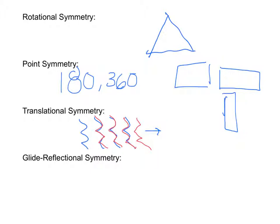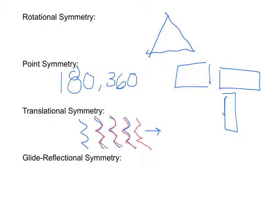Glide-reflectional symmetry means a figure can undergo glide-reflection isometry such that the image coincides with the original. A regular polygon of n sides has n rotational symmetries, and the measure of the smallest angle of rotation for a regular polygon of n sides is 360 divided by n degrees.